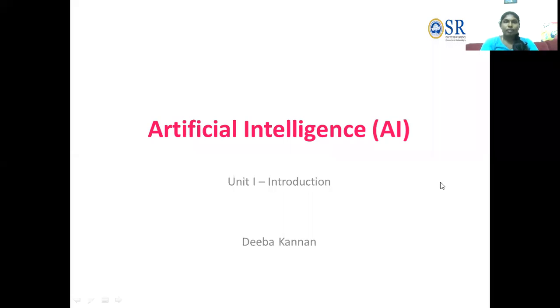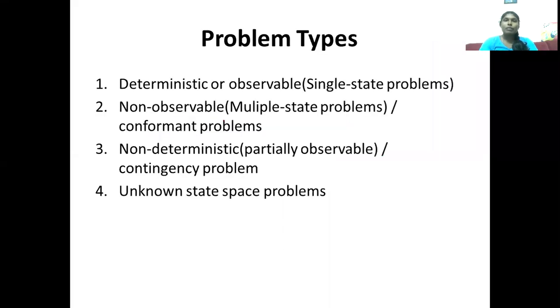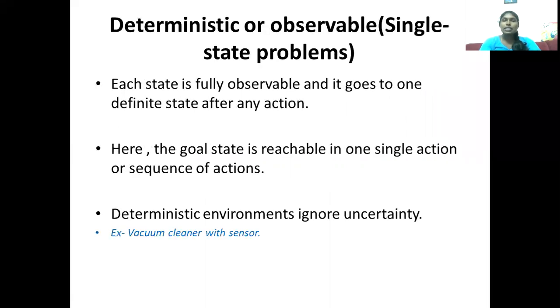Welcome back. In this video we are going to discuss different types of problems that exist in the real world for artificial intelligence — deterministic, observable, non-deterministic, non-observable, and unknown state-space problems. We will see them one by one. The first one is the deterministic or observable problem.